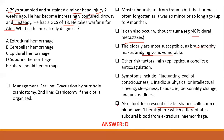Management of subdural hematoma involves evacuation by burr hole craniostomy. If the clot is organized, the second line is craniotomy. In summary, the diagnosis is subdural hemorrhage or hematoma because the patient is elderly and a minor injury caused disproportionate damage due to vulnerable bridging veins.